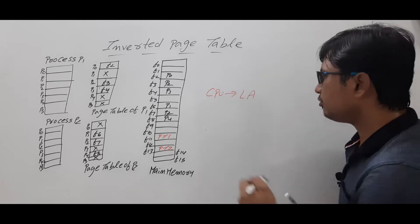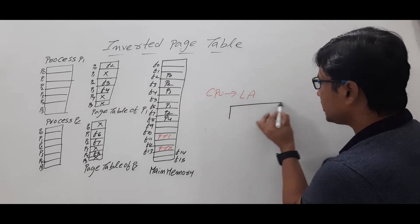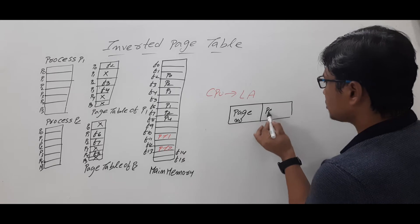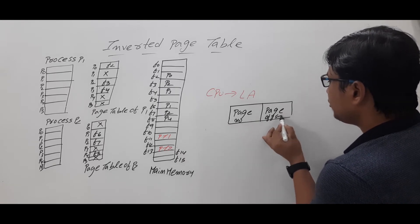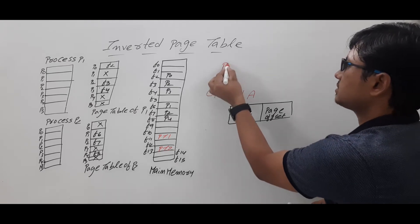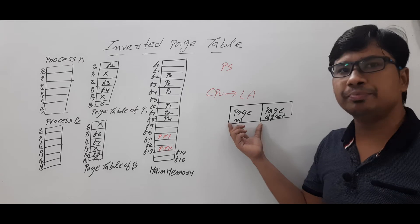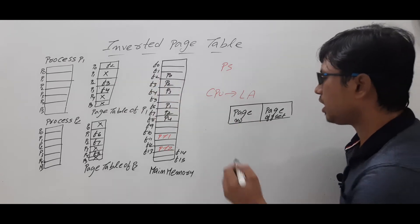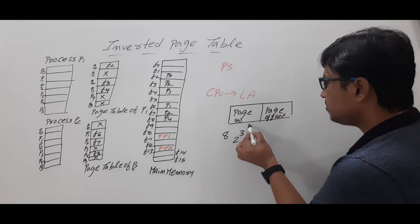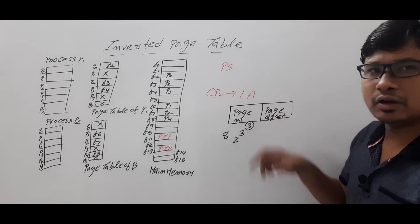The logical address is segregated into two parts: the page number and the page offset. The number of bits required for the page offset depends on the page size, and the number of bits for the page number depends on the number of pages. For example, if you have eight pages, eight can be represented as 2 power 3, so three bits are required for the page number.